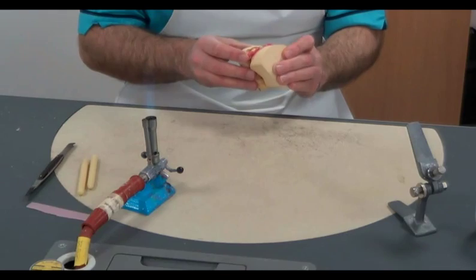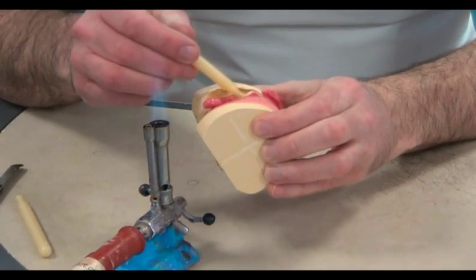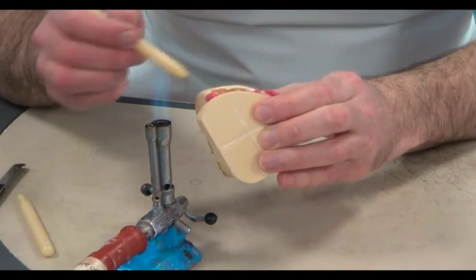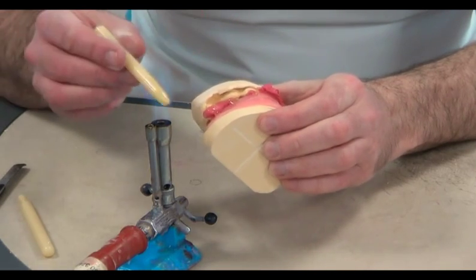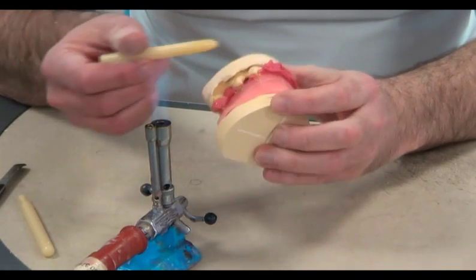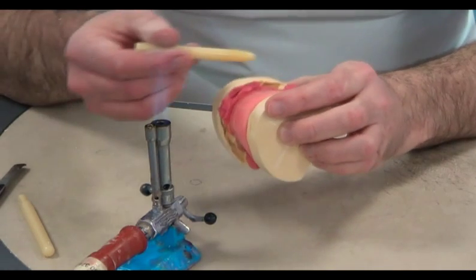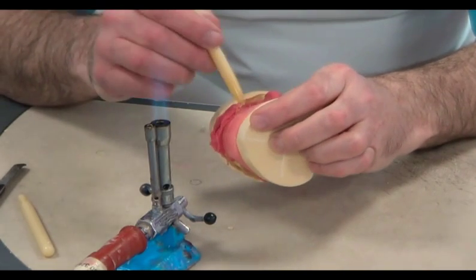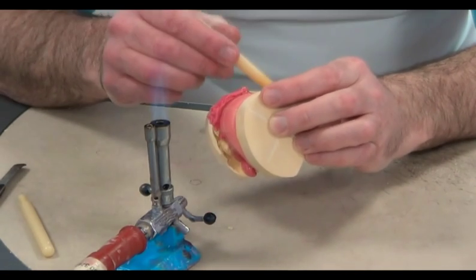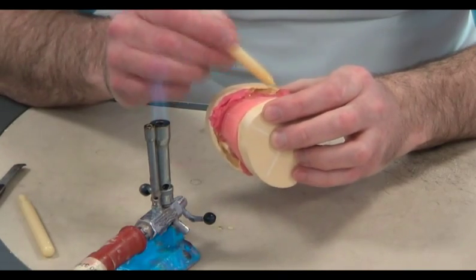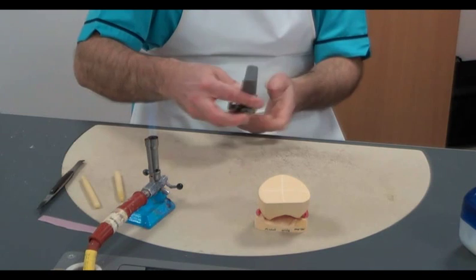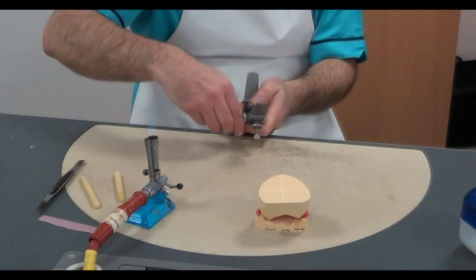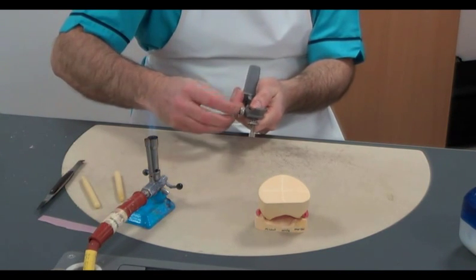We now locate the two models together in the correct occlusal position using a small application of sticky wax. Now the upper and lower models are firmly held in place, we're ready to proceed with the articulation process.